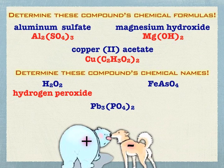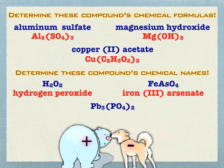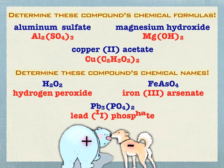The next example is iron-3-arsenate. You have to figure out that arsenate has a negative three charge, so that iron must have a positive three charge to cancel that out. And then finally the last case would be lead-2-phosphate. So we are using some of the crisscross techniques from last time, figuring out the charge of multiple-charge cations, and now we're adding in the polyatomics — it's getting a little more complex, but nothing you can't handle with some practice.